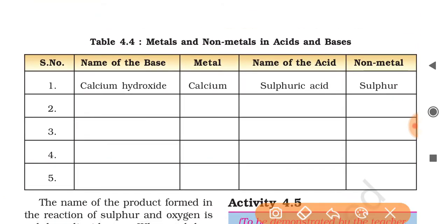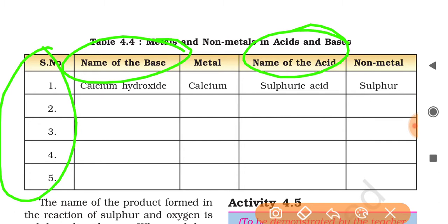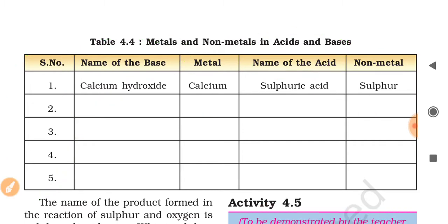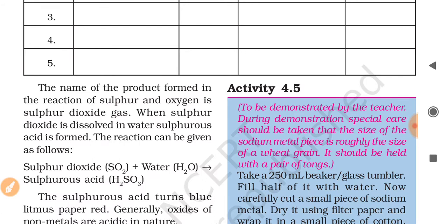You have to write their names, at least five names there. Name of base you have to write, and name of acid. You can write sodium hydroxide - metal is sodium - like that. And hydrochloric acid - what are the non-metals present there? Chlorine, you can write it like that. You have to do this. If you don't understand or find it difficult, you can ask me.